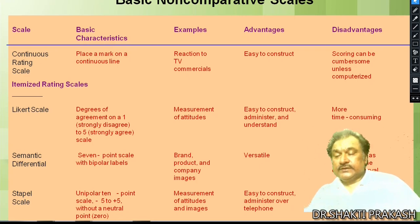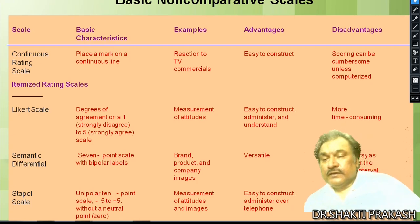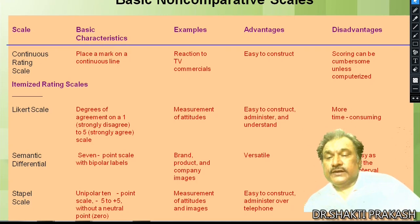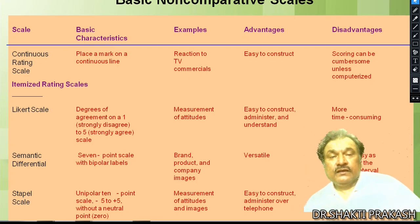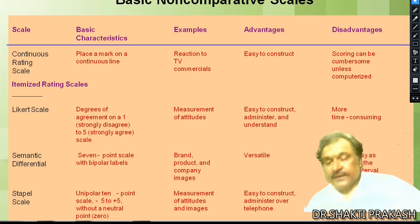For the Likert scale: it measures the degree of agreement from 1 (strongly disagree) to 5 (strongly agree). It is used for measuring attitude, psychological thinking, and preferences. The advantage is that it is easy to construct, administer, and understand. For the Semantic Differential scale: it is a 7-point scale with bipolar labels — one side positive, the other negative extreme. It is used for measuring brand, product, and company images.